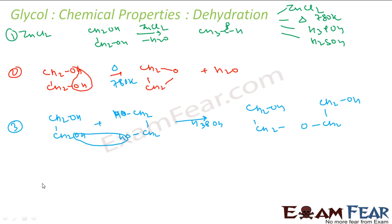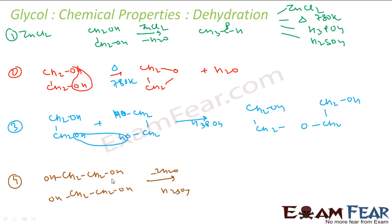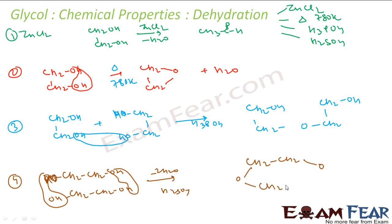The fourth dehydration condition is H2SO4. Using H2SO4 on glycol removes two water molecules. What we get is a cyclic product: CH2CH2-O-CH2CH2 with oxygens on both sides, forming dioxane. These are the four different products based on the different dehydrating agents used.